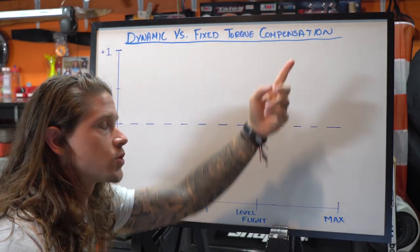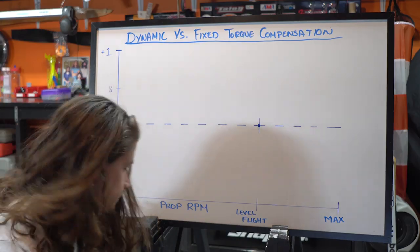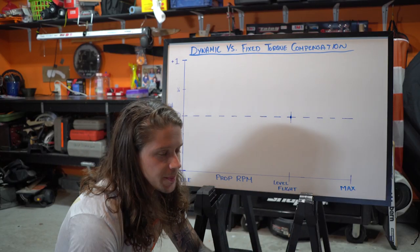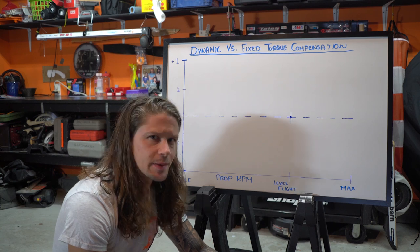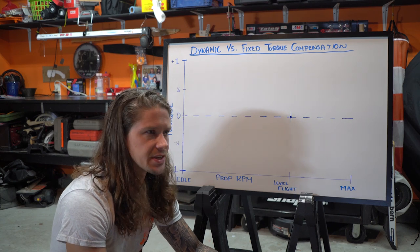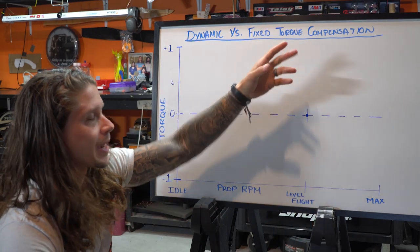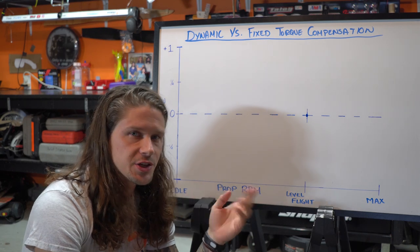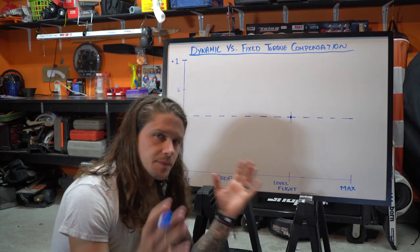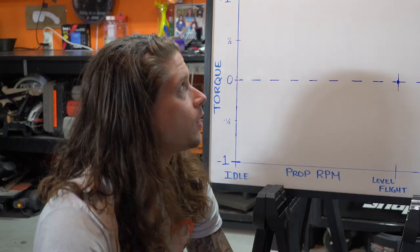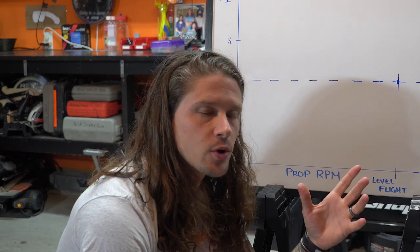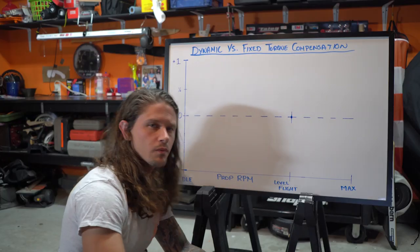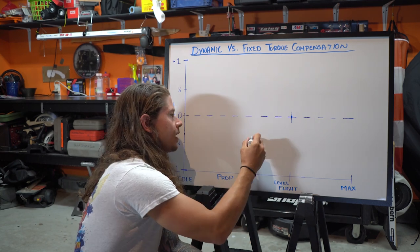Dynamic versus fixed torque compensation. Before we get into comparing them, what am I talking about when I talk about torque compensation? When I'm talking about torque, I'm not talking about the output torque of the engine itself on the paramotor — that's something completely different. What I'm talking about is the torque on the paramotor itself as a result of the propeller spinning through the air.